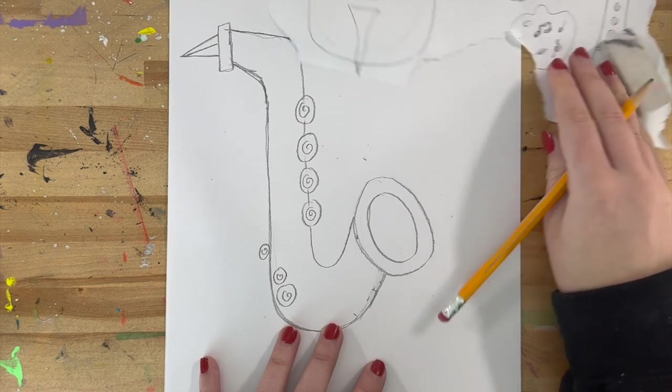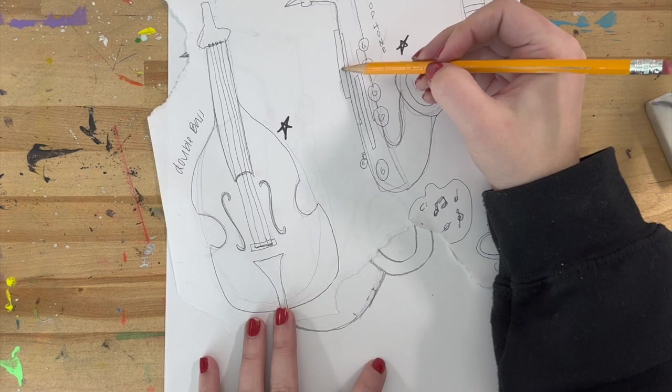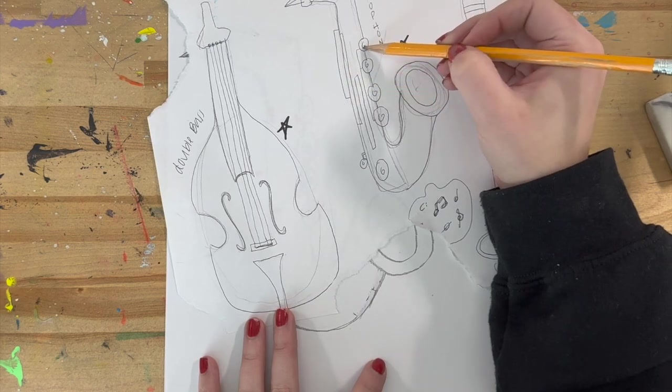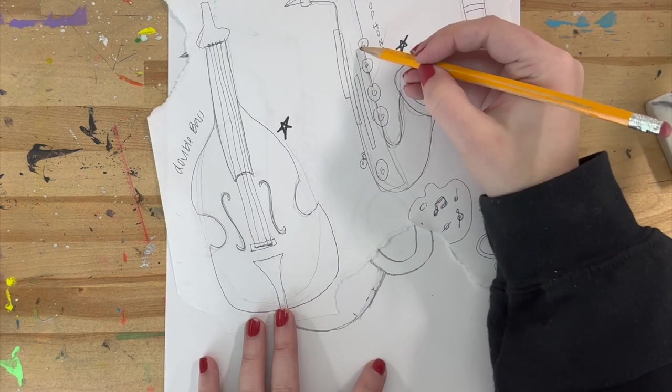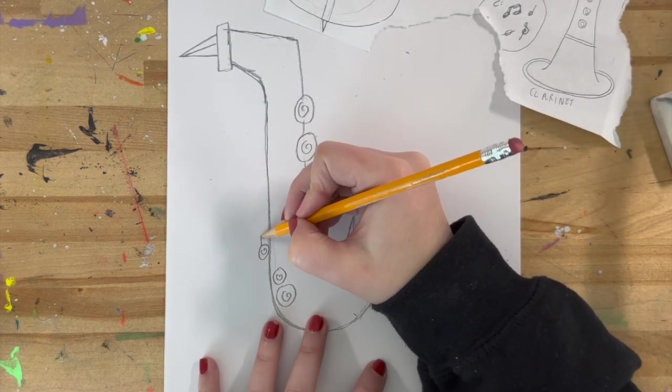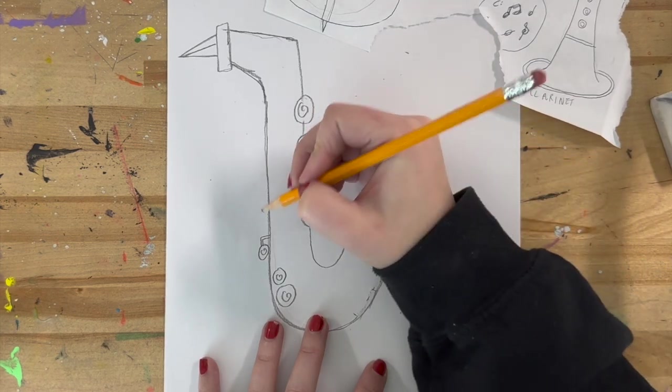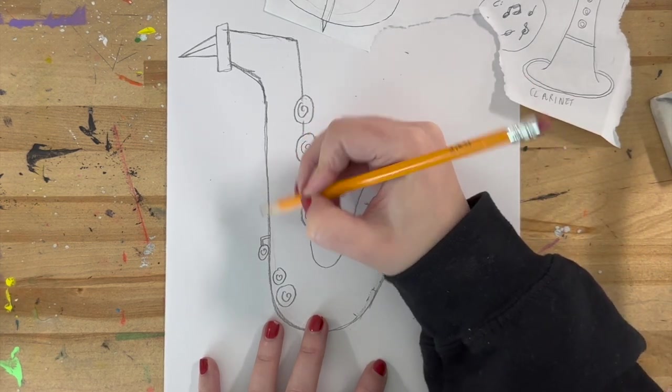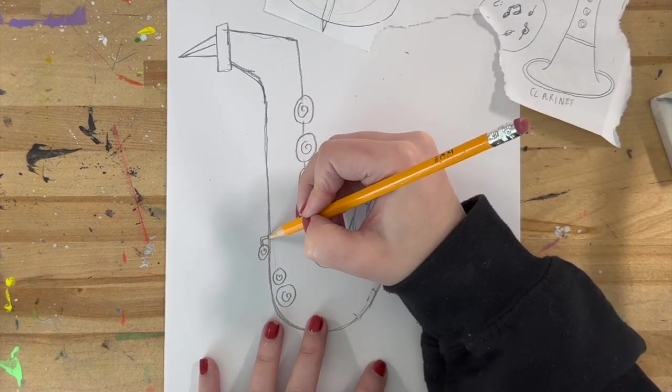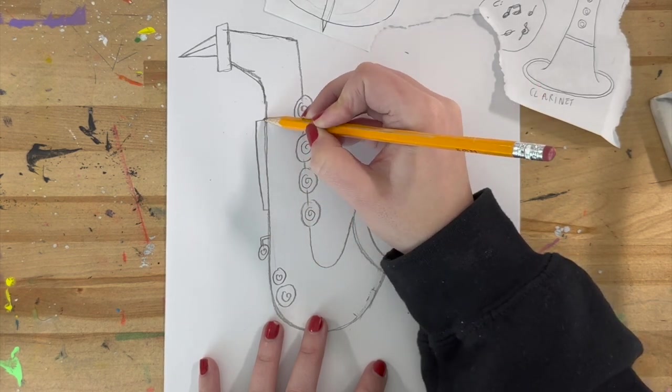Awesome. And then there are different rectangular pipes that connect those buttons to the body of the saxophone. So for that, we can just do some lines and rectangles. One connecting that button to the body of the saxophone. I'm going to do a rectangle on the side here.